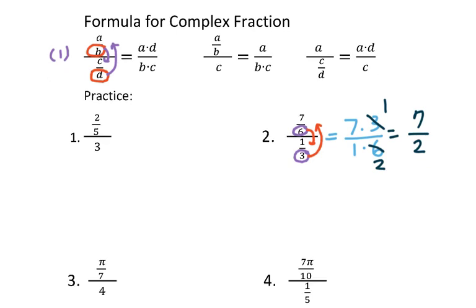For the second formula, still focus on the longest division line first, then look for the denominator above and below it. Above the longest division line, B is the denominator. Below the longest division line, there's no denominator, so B is 1, but we don't use that. We drop down B to the bottom giving A over B times C. For the third formula, the longest division line is here, D is the denominator, and jumping it up gives A times D over C.